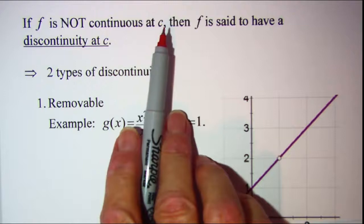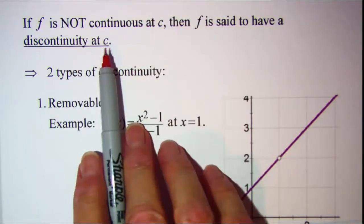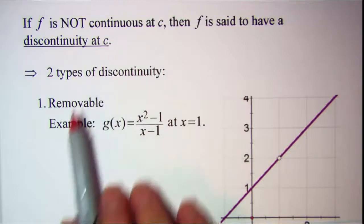If f is not continuous at c then f is said to have a discontinuity at c. There are two types of discontinuity.